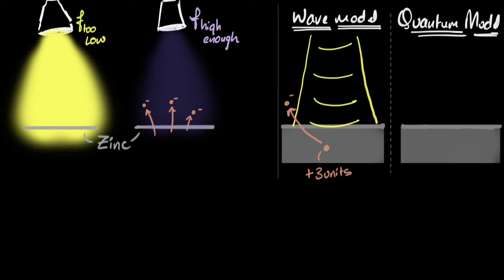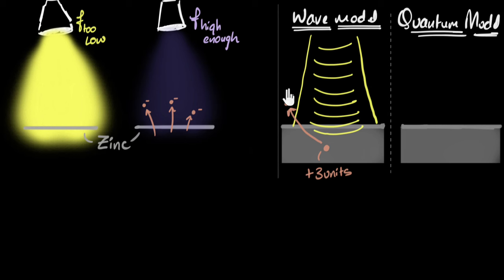According to the wave model, if you shine brighter light, the electron gains so much more energy and should escape much more easily, giving you more photoelectric effect. That's why the wave model doesn't make sense — it can't explain why frequency matters and not intensity. But now let's see what the quantum model says.